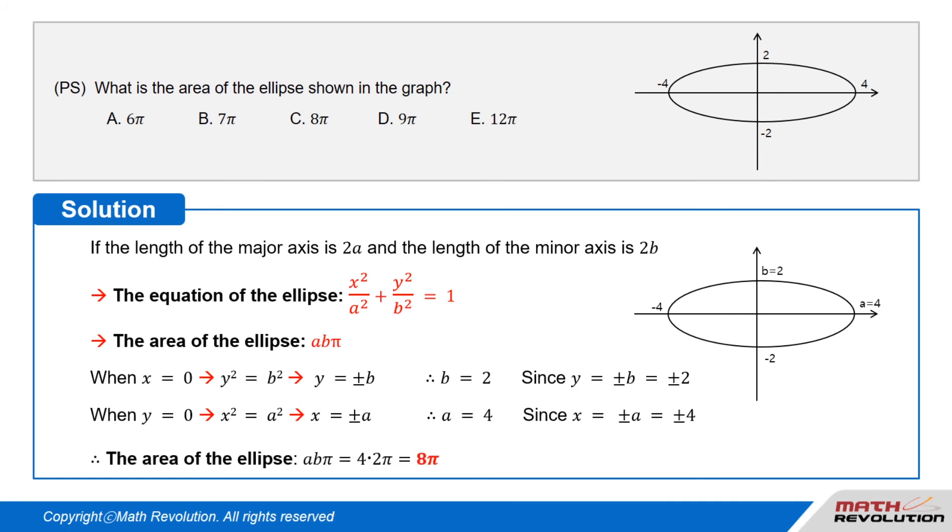So the area of the ellipse is ab·π = 4 × 2 × π = 8π.